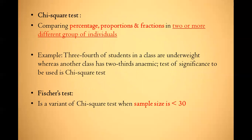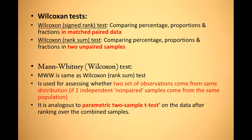Moving to the chi-square test: it compares the percentage, proportion, and fraction in two or more different groups of individuals. For example, three-fourths of students in one class are underweight while another class has two-thirds anemic — two different groups — so the test of significance is the chi-square test. The Fisher exact test is a variant of the chi-square test and is done when the sample size is less than 30.